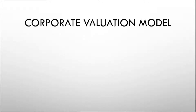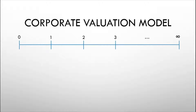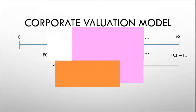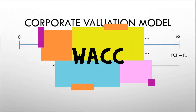Let us use the following timeline to illustrate how this is going to work. We have free cash flows to be generated by the firm for year 1, year 2, year 3, until infinity — forever. What we are going to do will be to discount these cash flows back to year 0 using the appropriate discount rate. Since we are discounting cash flows generated by the firm, the appropriate discount rate would be the weighted average cost of capital, or WACC.